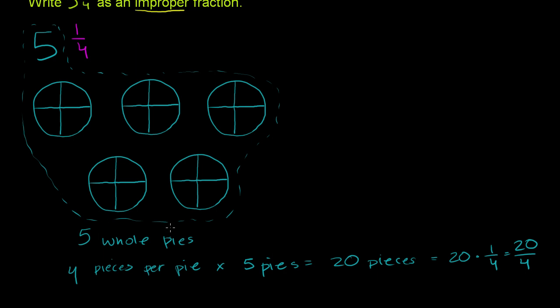So we have 5 whole pies is equal to 20/4. Let me write it like that. Or we could write it as 20 over 4. So that's what the 5 pies represent. 20/4 or 20 pieces, where each piece is 1/4.